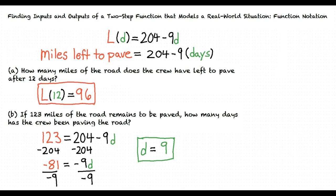Okay. I think I get it now. So, just to clarify, for a problem that asks us to find inputs and outputs of a two-step function that models a real-world situation, we have to decide whether to plug in the number we are given in the question into either the output or input. Once we do that, we can then solve the problem for either the input or the output.